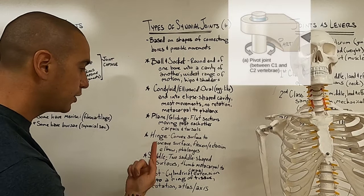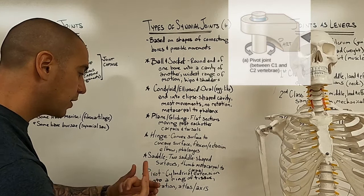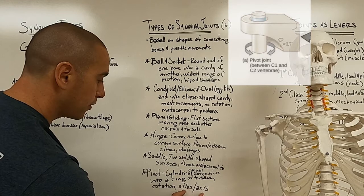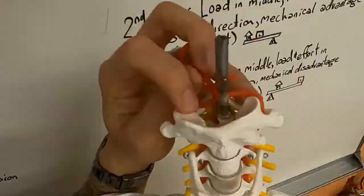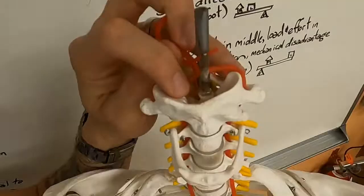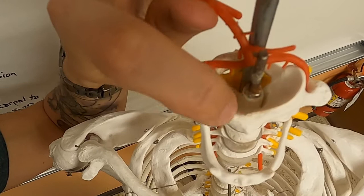And last on my list are pivot joints. It's where you have a cylindrical extension of a bone that goes into a ring of tissue, whether it's just bone or whether it's bone with some ligament there. I'm going to show you that. It really just allows rotation. The atlas and axis are the two first cervical vertebrae, C1 and C2. And the pivot joint here is this part of the axis sticking up into this part of the atlas, C1 and C2.